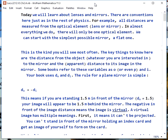Today we're going to look at lenses and mirrors. In just about all of physics there are conventions and this is no different. For example, all distances are measured from the optical element, which would be the lens or the mirror. And practically everything we're going to do will only have one optical element.